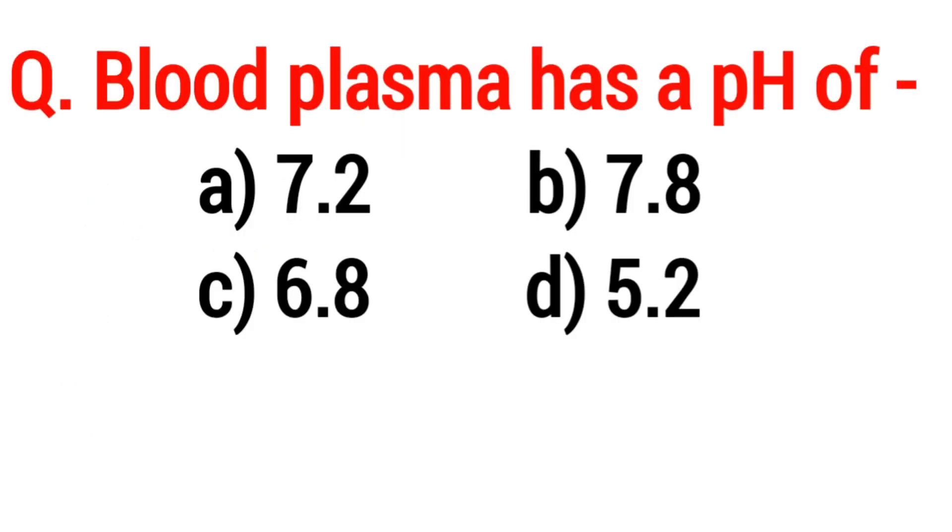Question: Blood plasma has a pH of - Option A: 7.2, Option B: 7.8, Option C: 6.8, Option D: 5.2. If you know this answer, you can tell me in the comment section. Thank you.